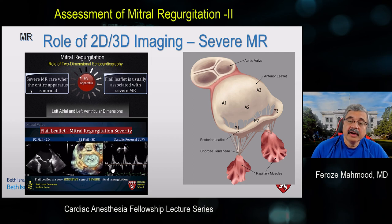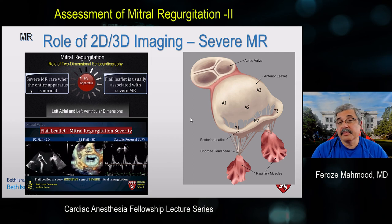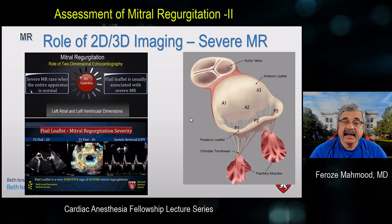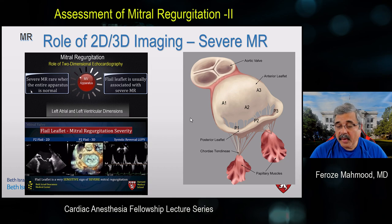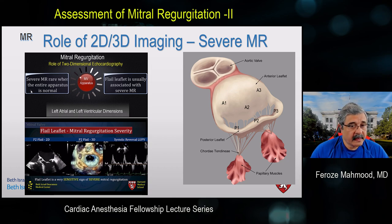As you can see on the left image, we have a flail leaflet obvious by two-dimensional echocardiography, also easily seen with three-dimensional echocardiography, and there is systolic flow reversal in the left upper pulmonary vein — meaning without even applying color flow Doppler, we can be very certain of the severe nature of this mitral regurgitation. Its importance cannot be understated: we must assess and analyze the mitral valve as part of an apparatus, not just two leaflets.